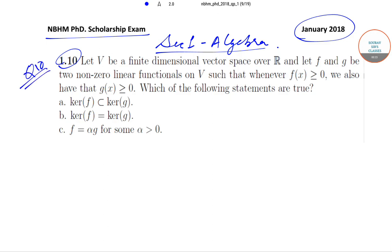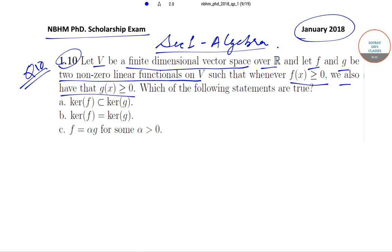In question number 10, it has been said that if V is a finite-dimensional vector space over R, and if f and g are two non-zero linear functionals on V, such that whenever f(x) ≥ 0 we also have g(x) ≥ 0.